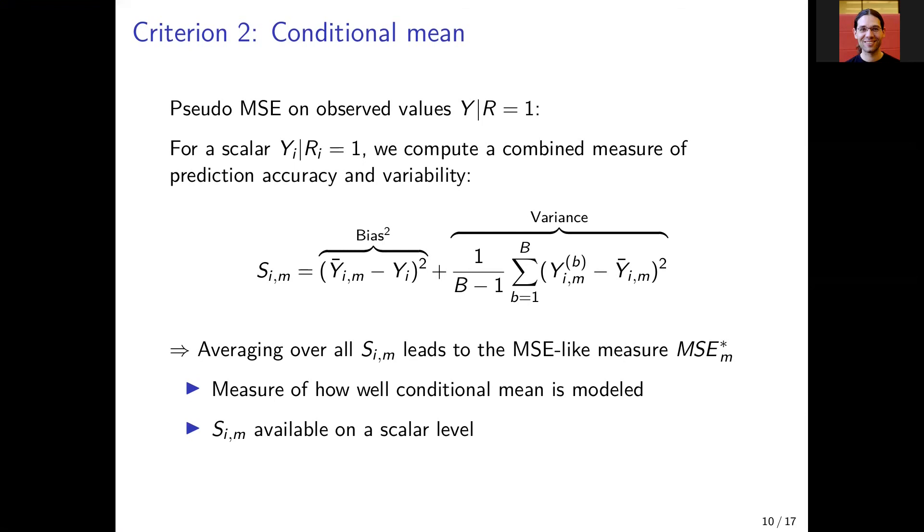The mean of all the draws can also be used to estimate the bias. Then we square the bias and combine it with the variance so that we get something like an MSE-like measure.